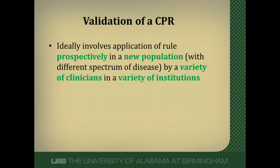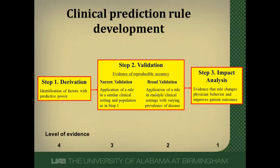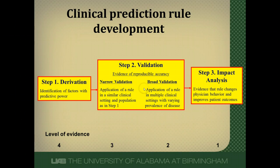Ideally, we derive the rule and then test it prospectively in a new population with a different spectrum of disease — including early and late disease — across different institutions. Unfortunately, many clinical prediction rules undergo only narrow validation, such as splitting 1,000 patients into two groups of 500: deriving in the first 500 and testing in the second 500. That is the minimum acceptable validation. Broader validation across different settings, patients, and clinicians is much preferred.